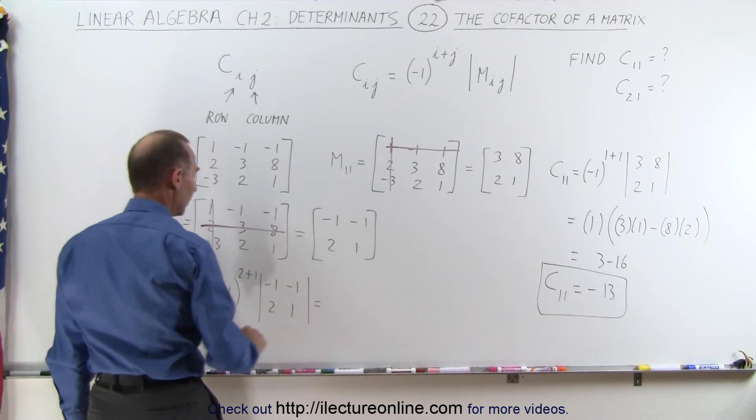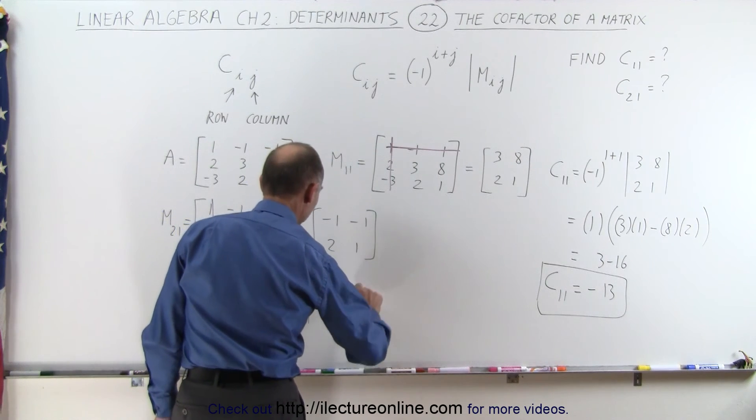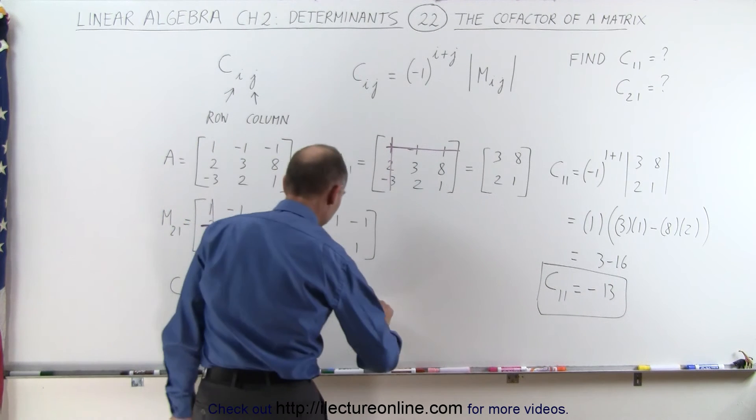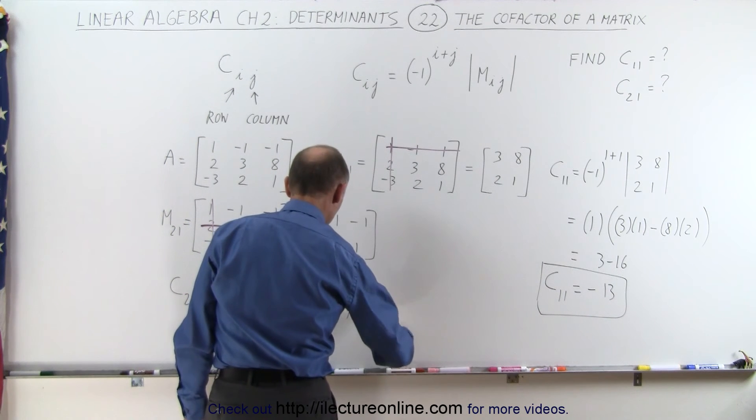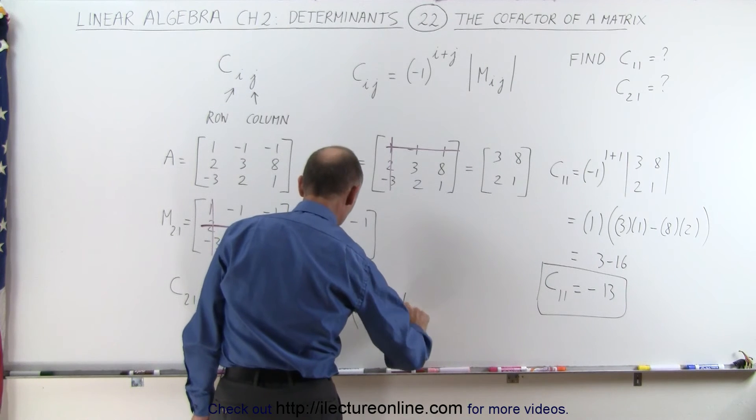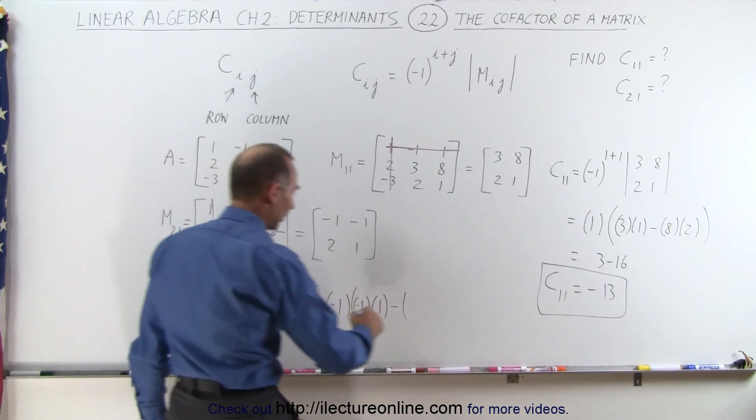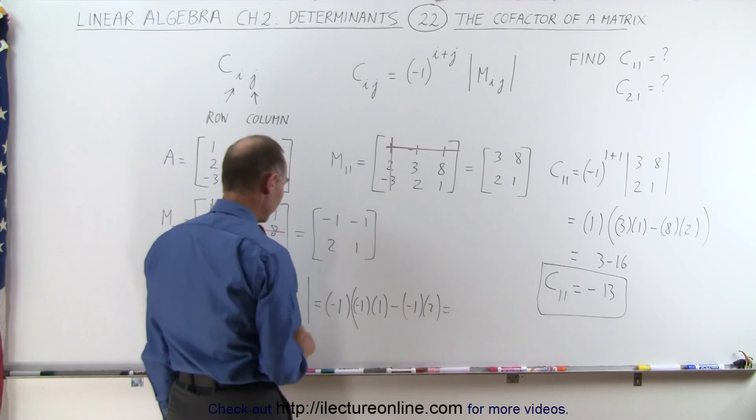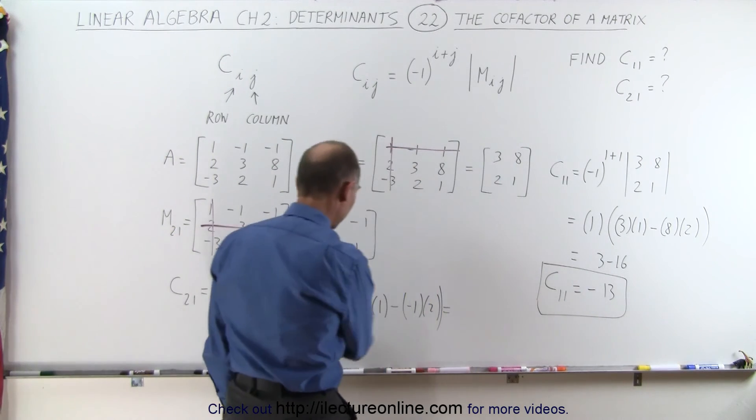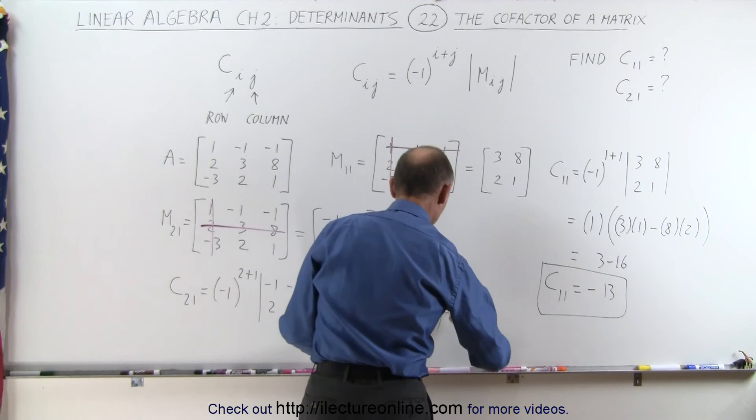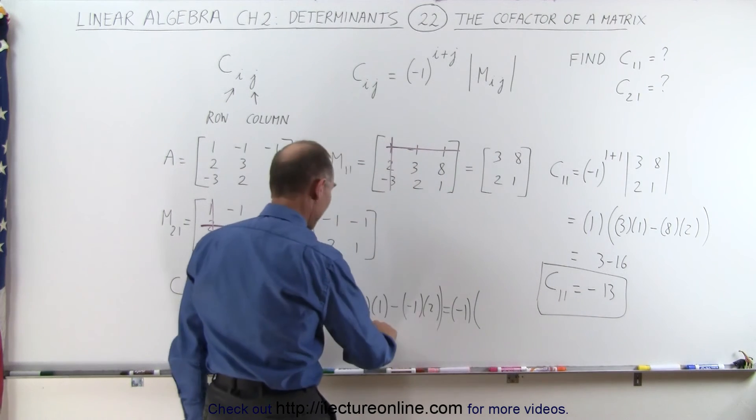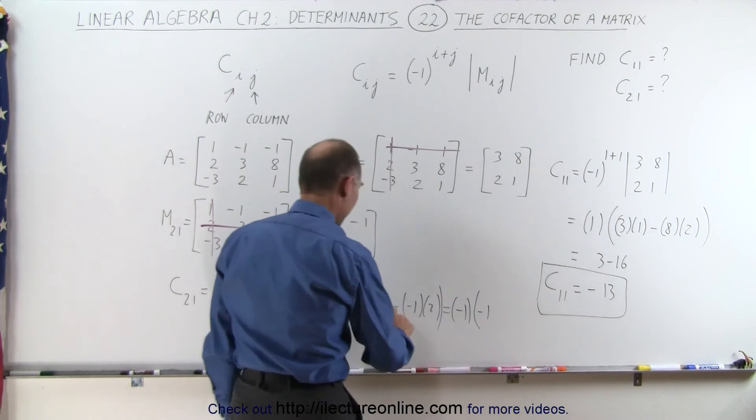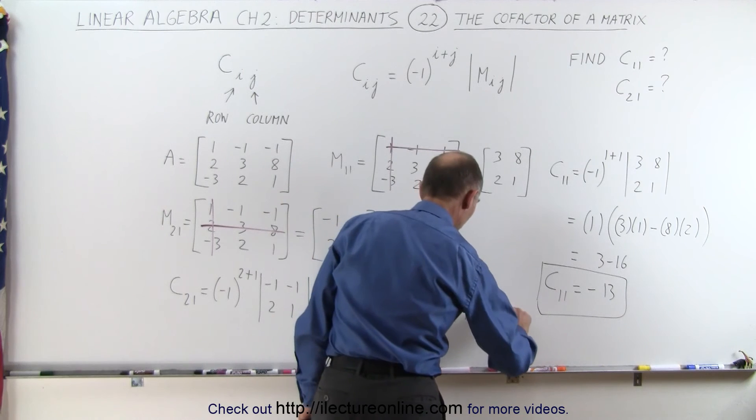So this becomes a minus 1 times, you multiply the cross diagonals, that would be minus 1 times 1 minus, when you multiply those together, minus 1 times 2. So this becomes minus 1 times minus 1 minus 1, and a minus times a minus is plus 2.